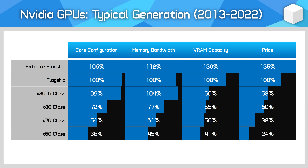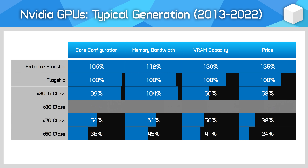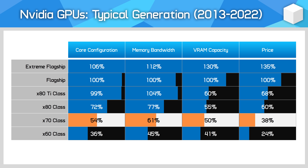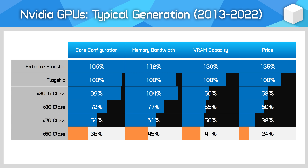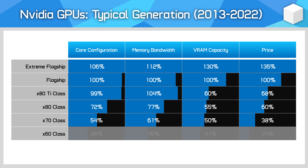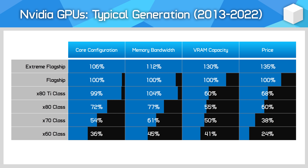So this is what a typical NVIDIA generation looks like when we average out configurations across the last six generations. Relative to the generation's flagship, the 80 series card delivers on average 72% of the shader cores, 77% the memory bandwidth, and 55% the VRAM capacity for 60% of the flagship card's price. The 70 series card delivers on average 54% the cores, 61% the bandwidth, and 50% the VRAM capacity for 38% the price. And the 60 series has on average 36% the cores, 45% the bandwidth, and 41% the VRAM capacity for 24% the price. You can clearly see how each jump down in the product stack sees a larger reduction to the price compared to its reduction in configuration, which preserves the value proposition of lower-tier models.